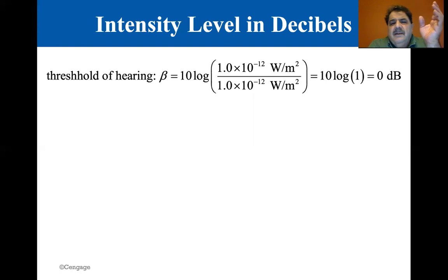So the threshold of hearing is 10 log, 1 times 10 to the minus 12 watts per meter squared divided by 1 times 10 to the minus 12 watts per meter squared. Well, the log of 1 is zero. 10 times that is zero, so it's zero dB. Zero dB is the threshold of hearing.